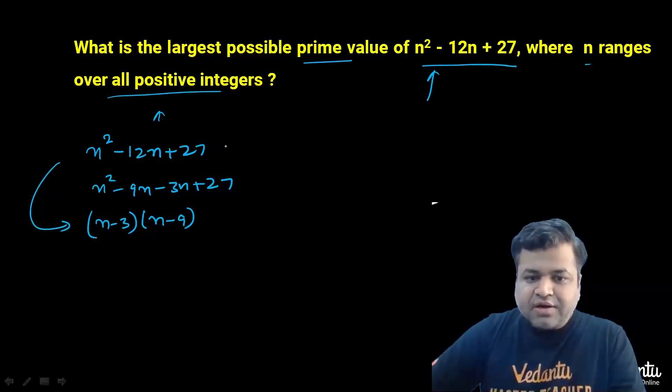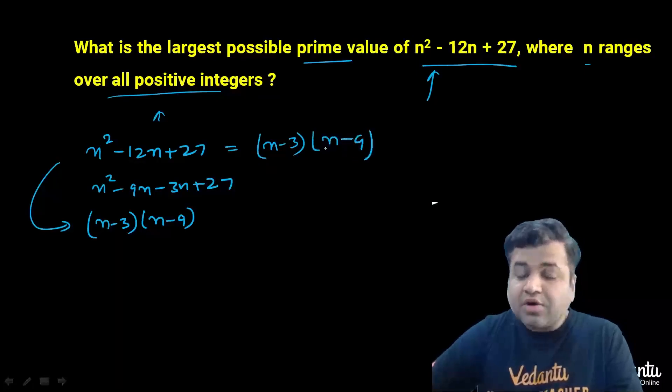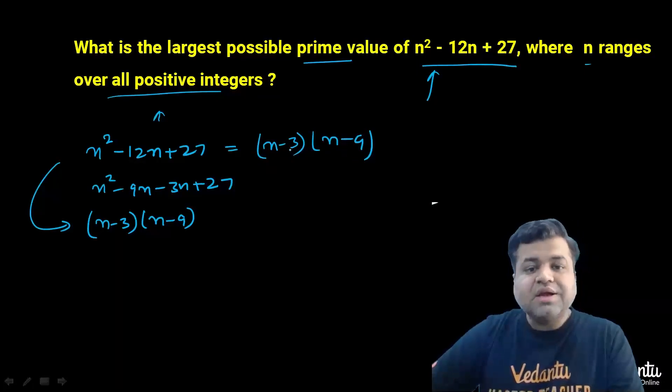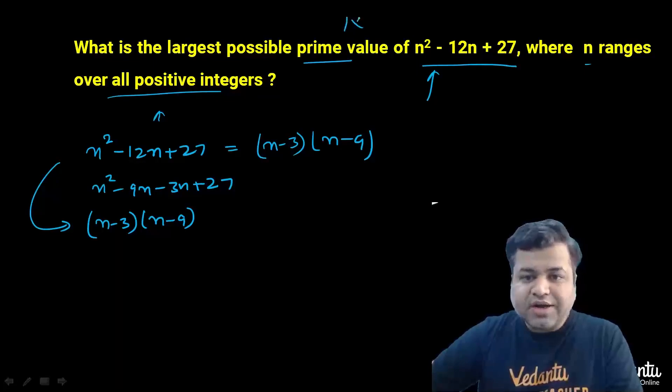So basically what we have done is we have rewritten this as a product of two factors. But a prime number cannot be expressed as a product of two factors. It can only be expressed as 1 times the prime number. So out of these two, one must be 1.